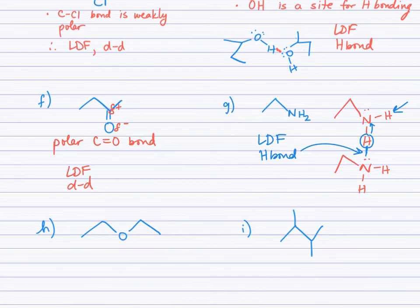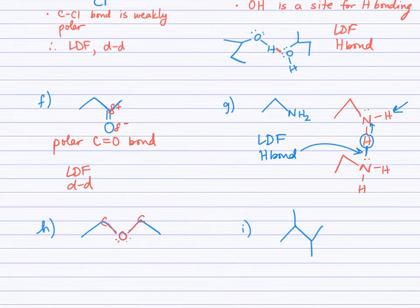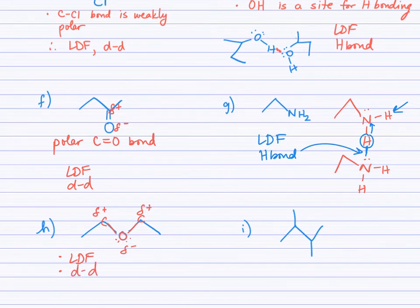In example H, there are carbon-oxygen bonds, and the shape at the oxygen is bent due to lone pairs repelling the bonded pairs of electrons. This means there is polarity in the molecule — a partially negative end and partially positive pieces — which sets up London dispersion forces and, because of the polarity, dipole-dipole attractions.